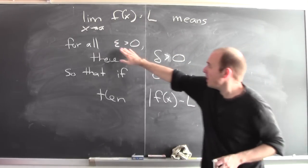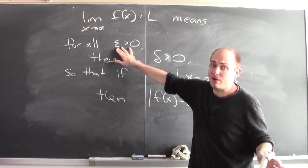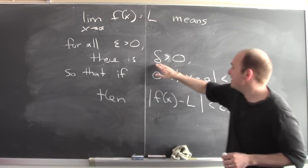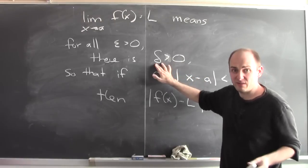It means that for all epsilon bigger than 0, this backwards 3 is the real number epsilon, a Greek letter or variable. So for all epsilon greater than 0, there's a delta greater than 0. This is the Greek letter delta.